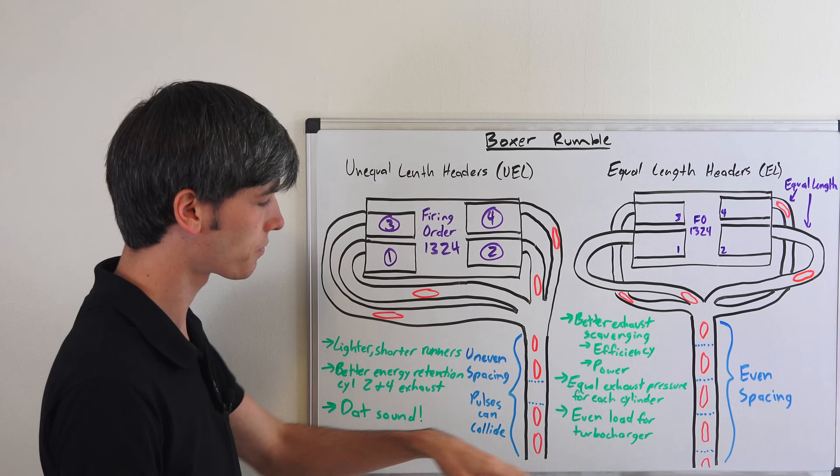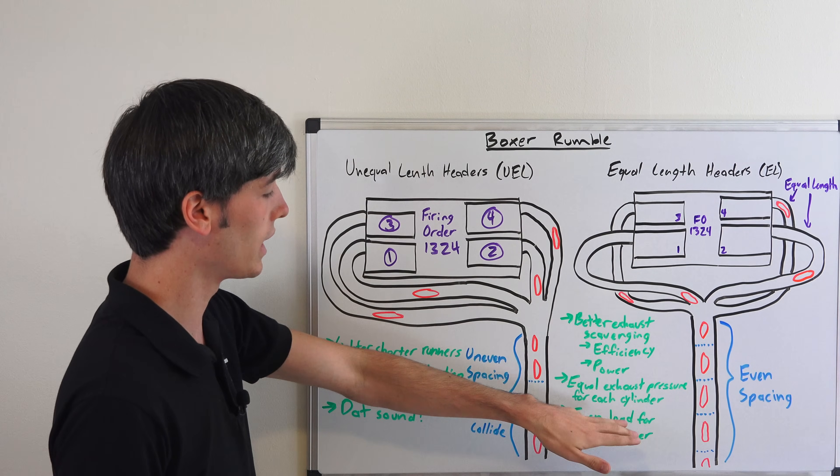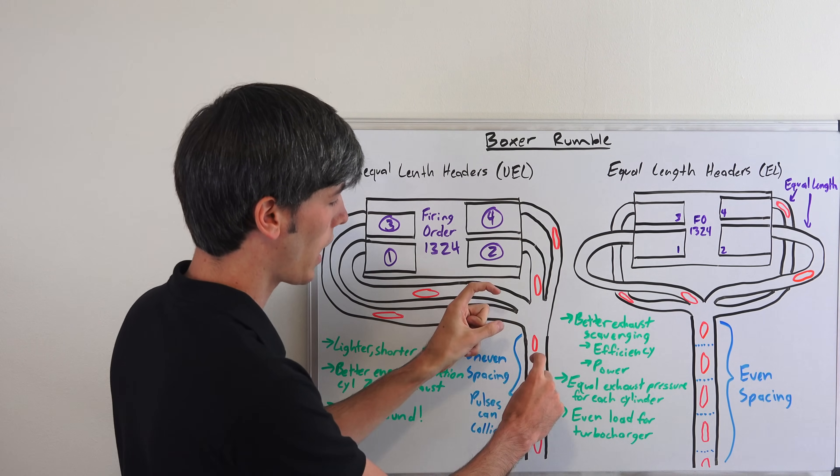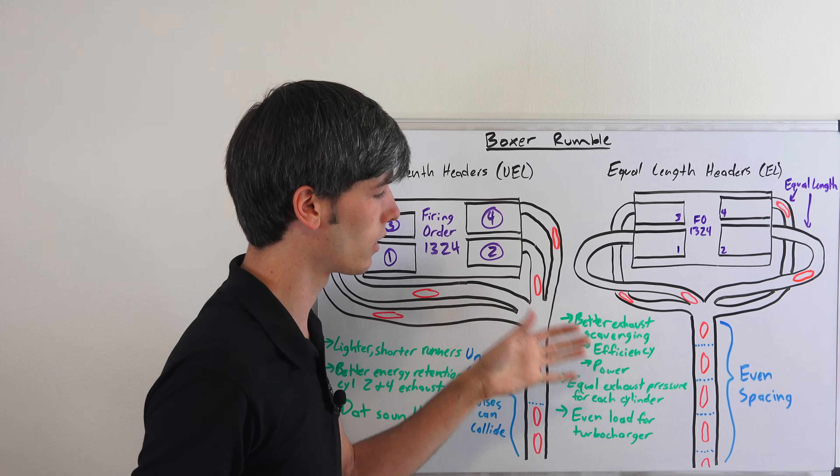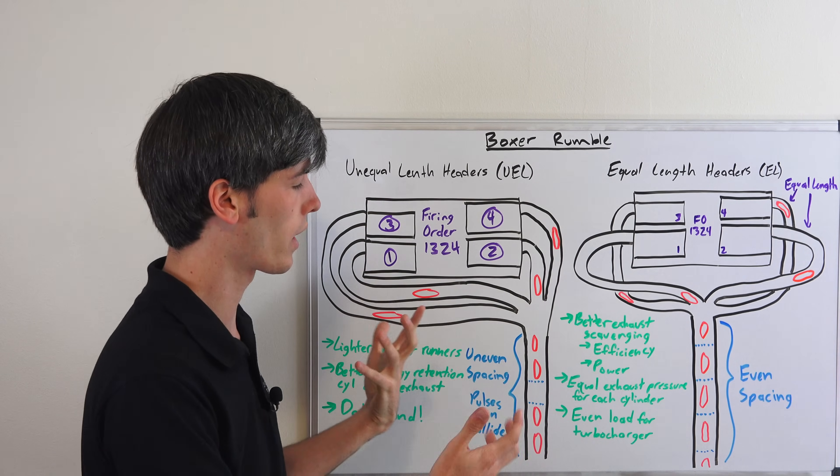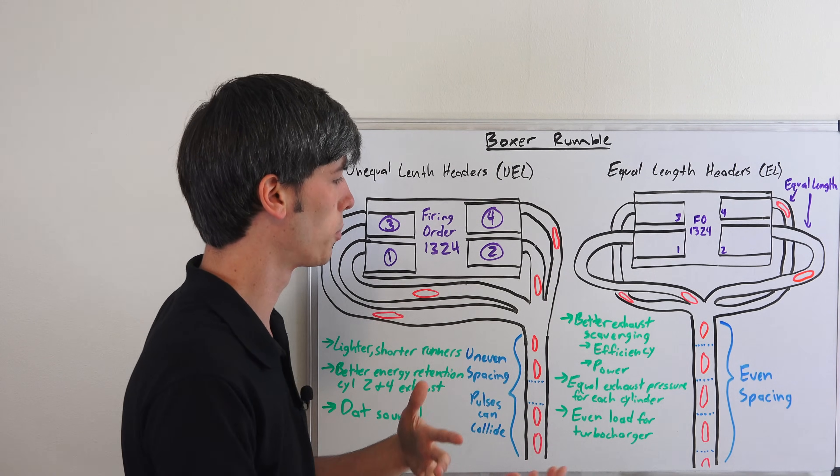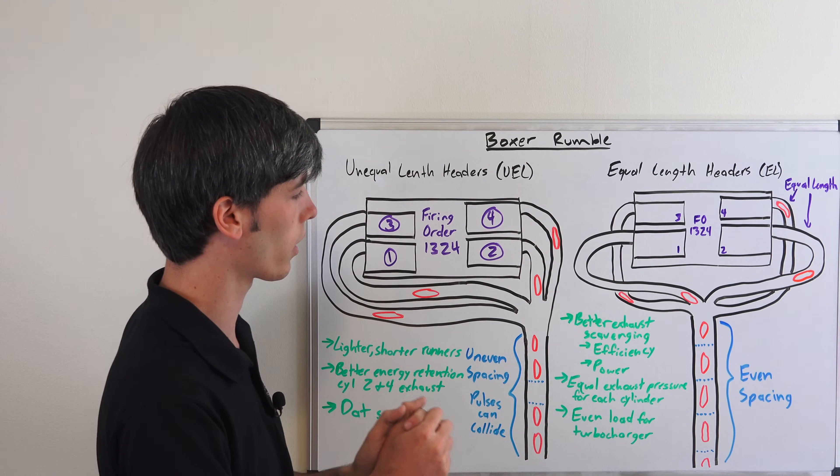You also have an even load for the turbocharger. So you're not having these pulses, some of them here and then some of them here, uneven loading going into the turbocharger. That could cause a little bit of a delay in spooling it up or uneven power delivery depending on how it works.